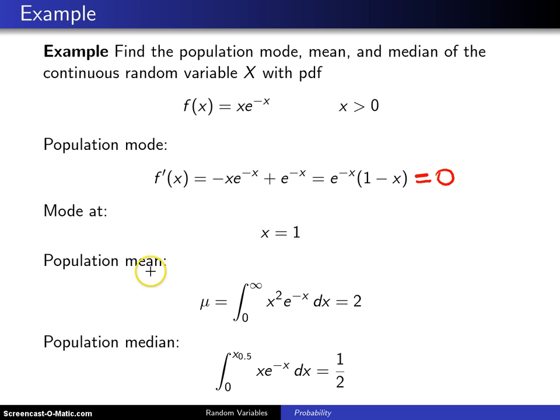The second measure of central tendency is the population mean, μ, which is the expected value of X. That will be the integral over the support from 0 to infinity of x times the probability density function. So x multiplied by xe^(-x) gives you this integral. This requires integration by parts, in fact twice. I won't put you through all of that, but it turns out the population mean is 2.